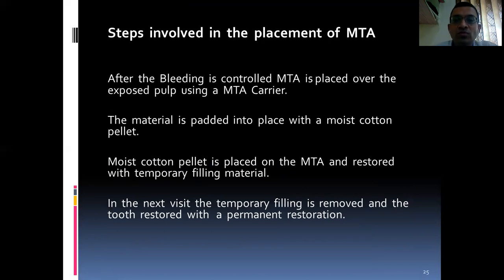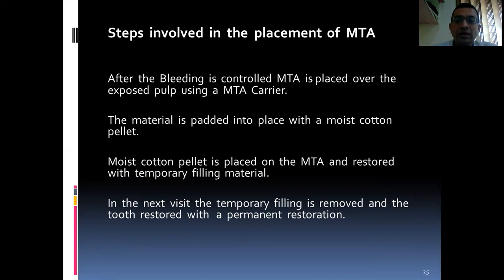Steps involved in the placement of MTA: after bleeding is controlled, MTA is placed over the exposed pulp using an MTA carrier. The material is padded into place with a moist cotton pellet. A moist cotton pellet is placed on the MTA and restored with a temporary filling material. In the next visit, the temporary filling is removed and the tooth is restored with a permanent restoration.